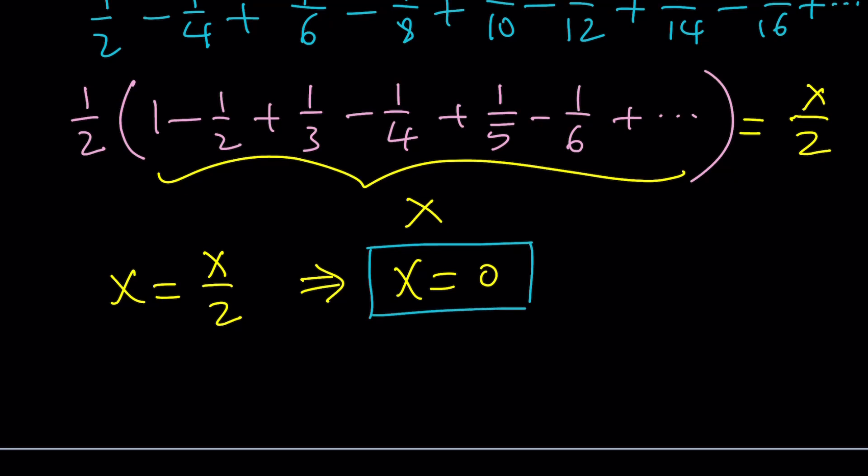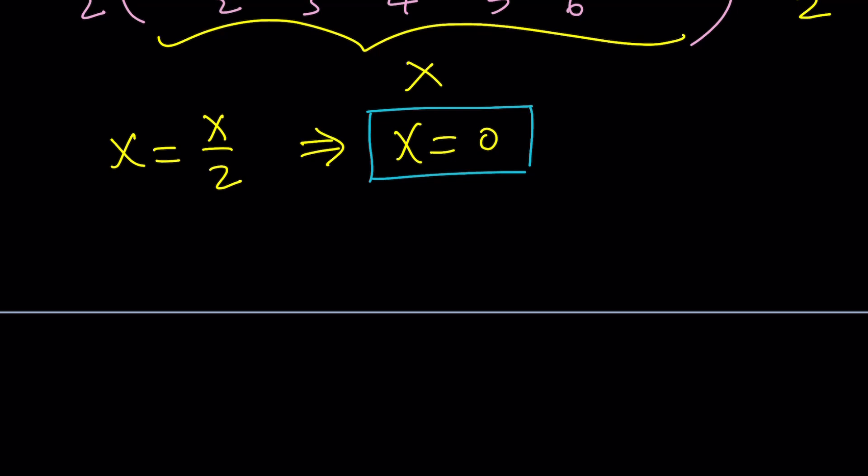Because the problem is we have a series that looks like this. I could probably write it differently with an n minus 1, too. But if you think about it, this is a negative 1 to the power of n plus 1, which is the alternating series. So this converges, but it does not absolutely converge.